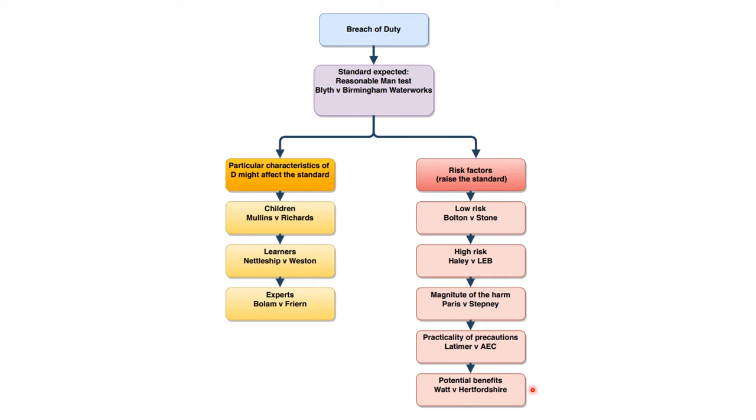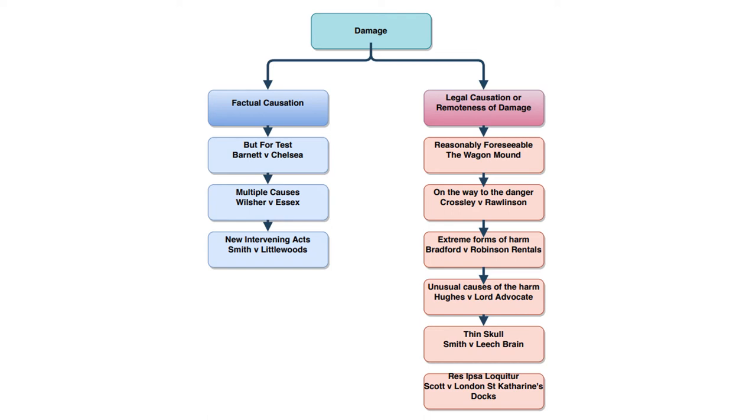That's breach of duty. Let's move on to the final stage in proving negligence. Our last stage is damage. To prove damage, we are looking at factual causation and legal causation or remoteness of damage. Just proving duty of care and breach of duty is not enough. The final stage is proving damage. To demonstrate causation in tort law, the claimant must establish that the loss they've suffered was caused by the defendant. We always start off with factual causation using the but-for test. The but-for test comes from the case of Barnett v Chelsea Kensington Hospital. It says, but for the defendant's actions, would the claimant have suffered the loss? If yes, the defendant is not liable because it would have happened anyway. If no, the defendant has passed that stage and is liable.